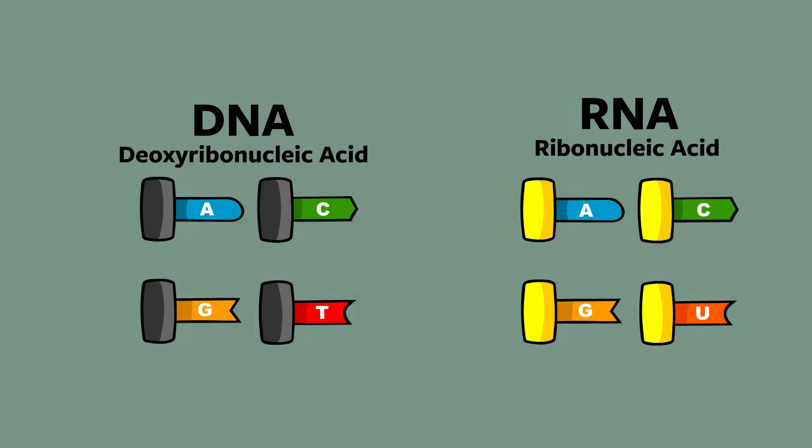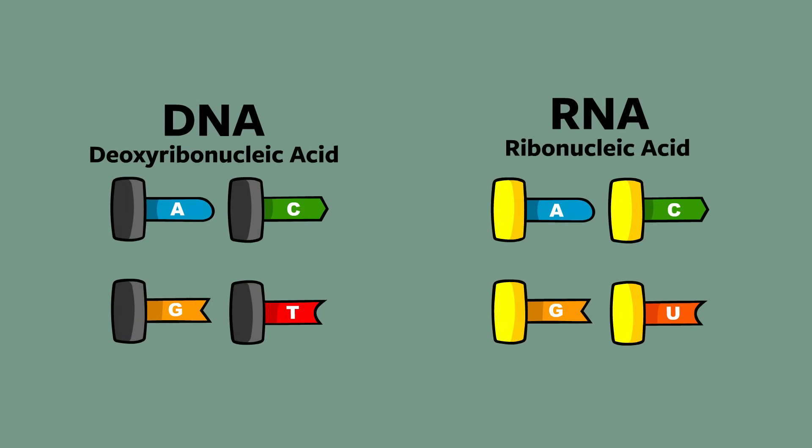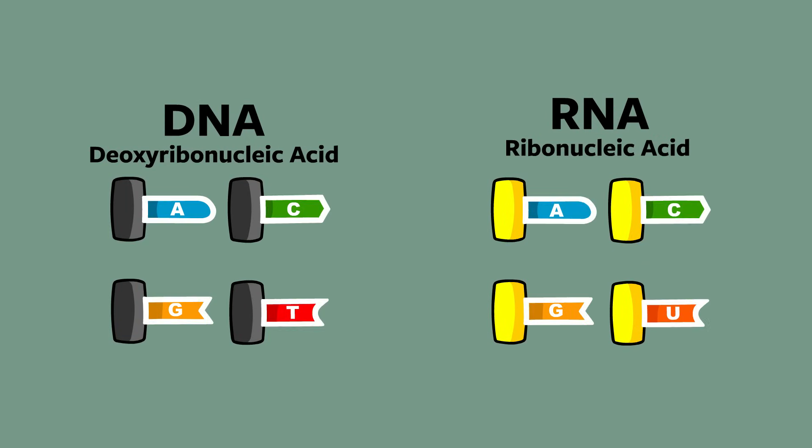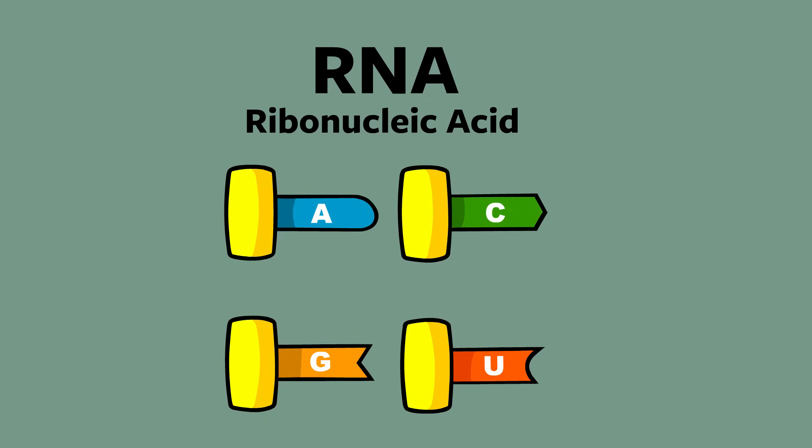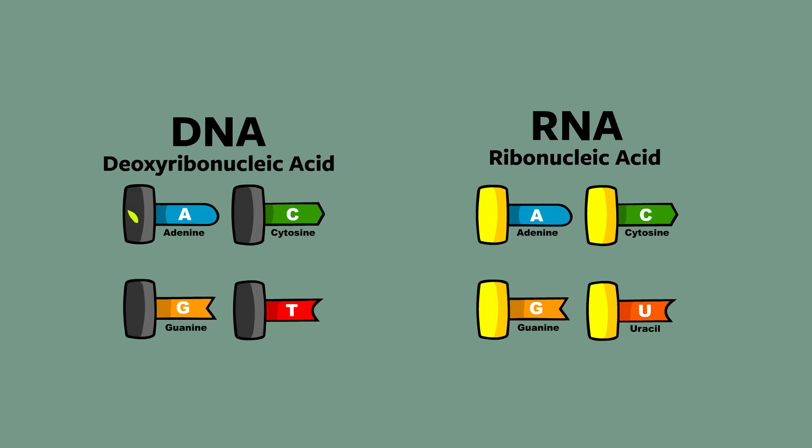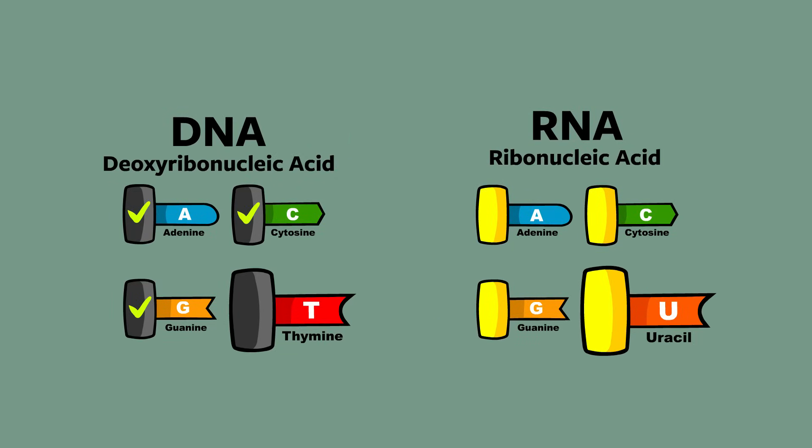The last noteworthy difference between DNA and RNA is found in their nucleotide bases. There are four types of RNA bases, which scientists have labeled A, C, G, and U. Adenine, cytosine, guanine, and uracil. Three of those four are identical in DNA, but DNA uses thymine instead of uracil.